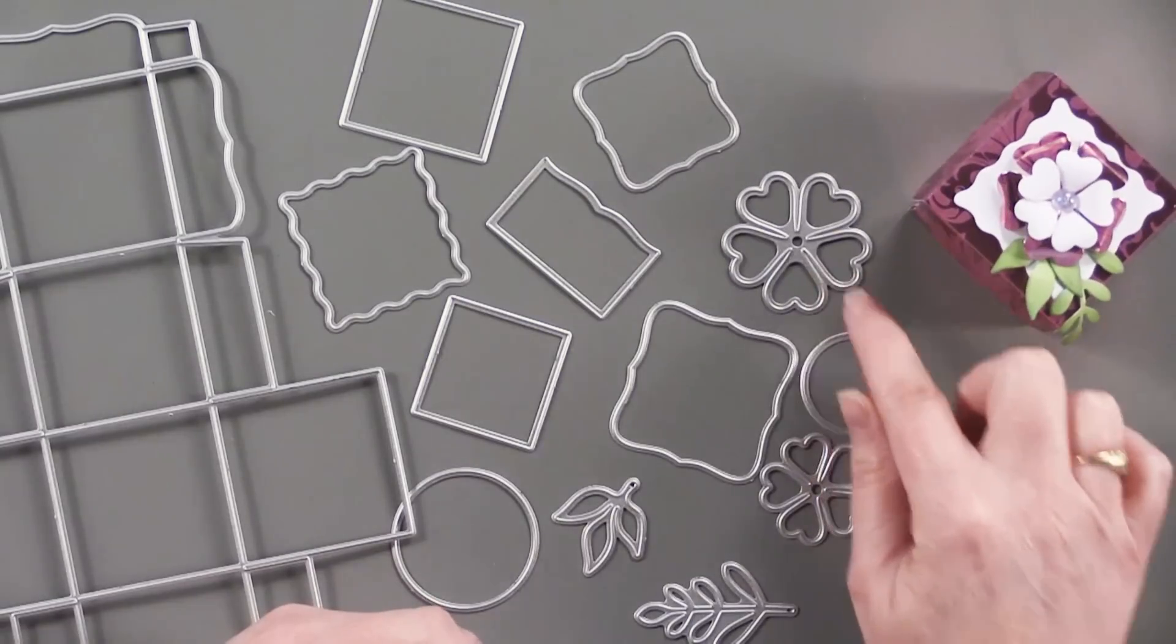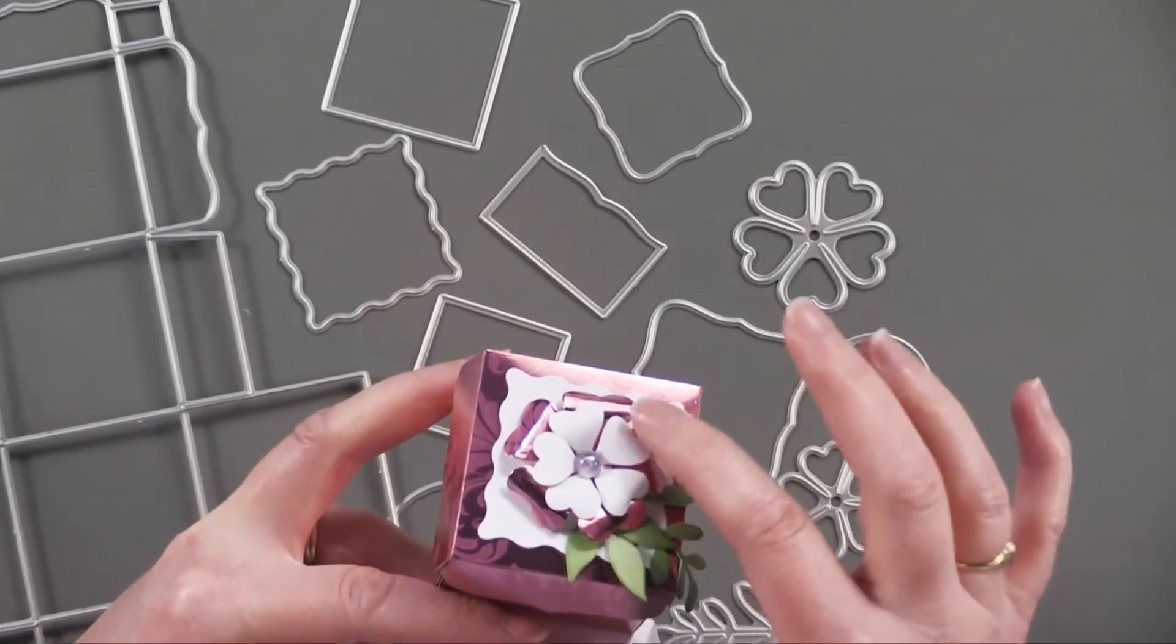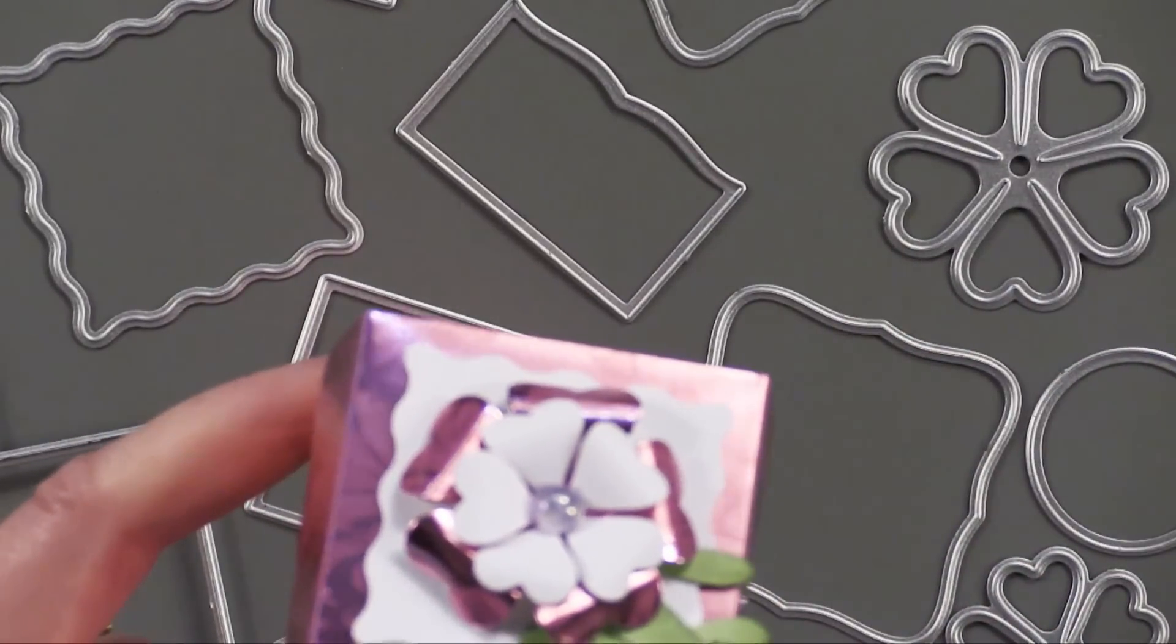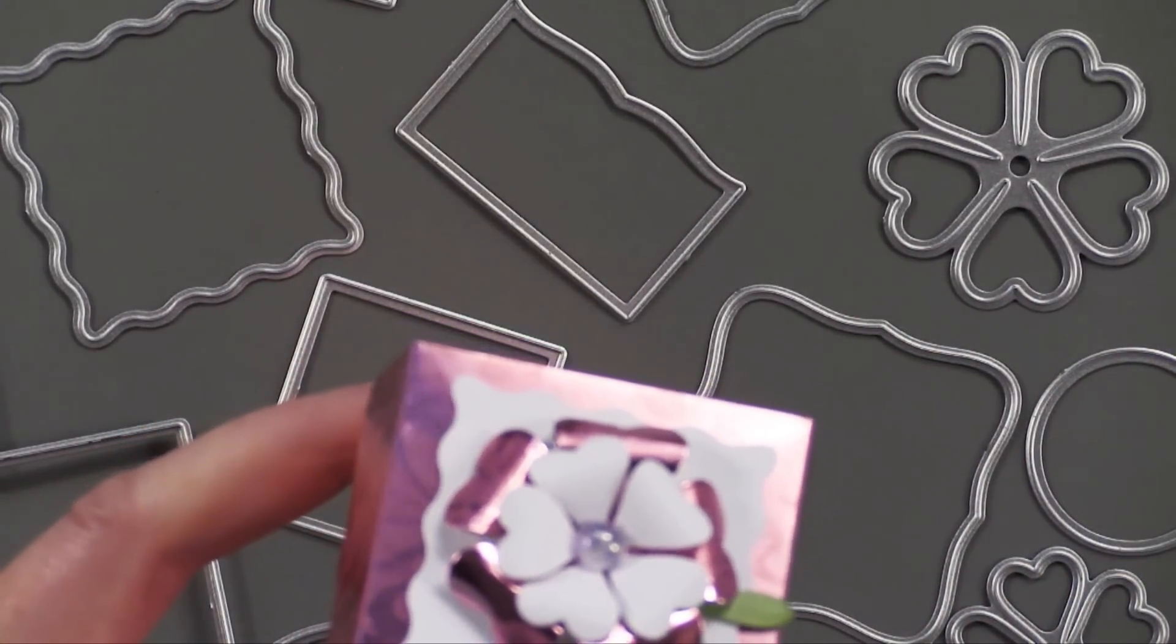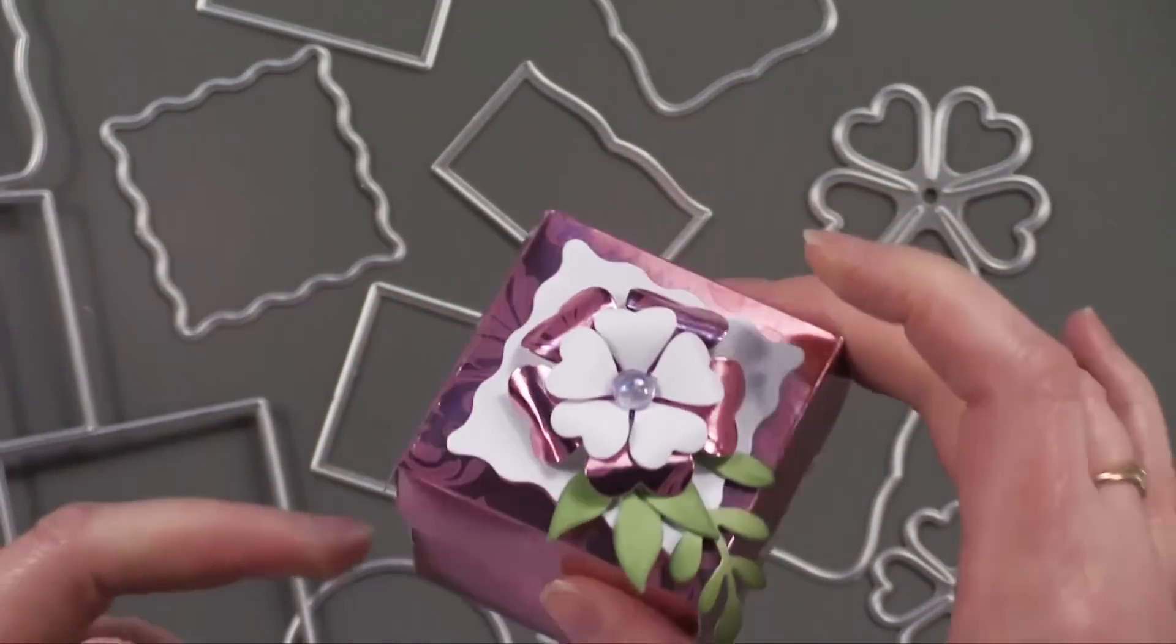And I just used these little flowers. I just took a paintbrush handle and I just curled the edge of each one of those. And then took a sweet little sparklet and put one on top there. It was really simple to put together. So they would be really easy to mass produce.